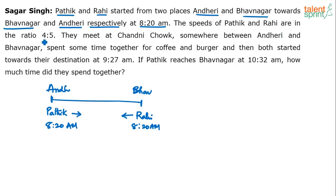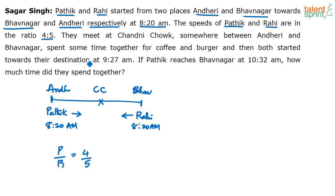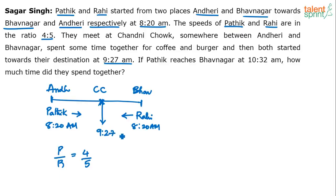Their speeds are in the ratio 4:5. Speed of P to speed of R is 4:5. They meet at Chandni Chowk — somewhere between the two stations — spend some time together for coffee and burger, and then both started towards their destination at 9:27am. So there's a meeting point where they spend some time, and at 9:27am they started to their respective destinations.